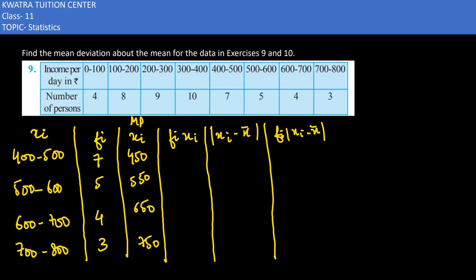Now f×x multiply. 450 into 7 will be 3150. Then 550 into 5 would be 2750. Then we have the next one, which is 4 into 650, which is 2600. Then 750 into 3 would be 2250.